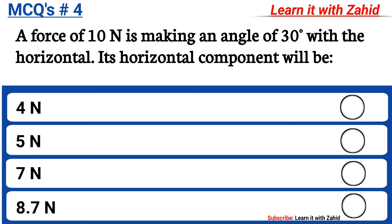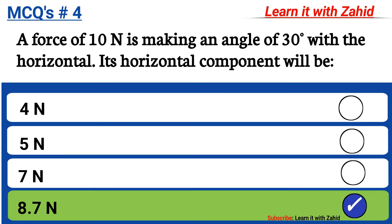A force of 10 Newton is making an angle of 30 degrees with the horizontal. Its horizontal component will be: option A four Newton, option B five Newton, option C seven Newton, option D eight point seven Newton. The correct answer is option D, eight point seven Newton.